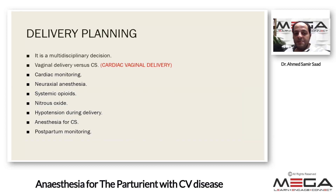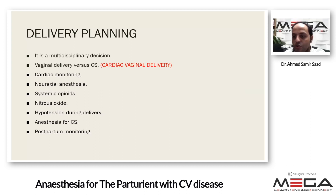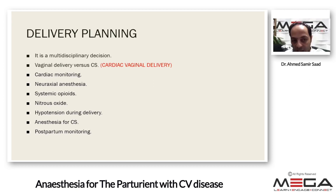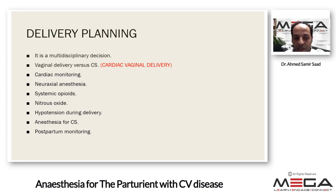Our plan for these patients requires a multidisciplinary decision. We should choose between vaginal delivery versus cesarean section. Vaginal delivery is usually preferred because blood loss and infection rates are lower. However, cesarean section may be chosen for very deteriorated patients, such as those with ejection fraction less than 30%, who cannot manage the increase in preload and afterload during delivery. We may also use cardiac vaginal delivery.